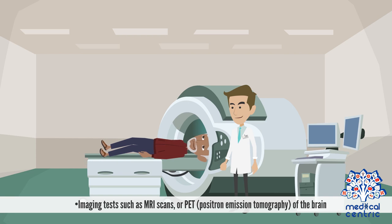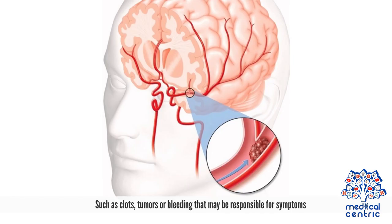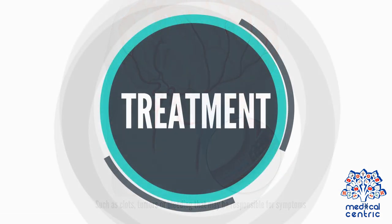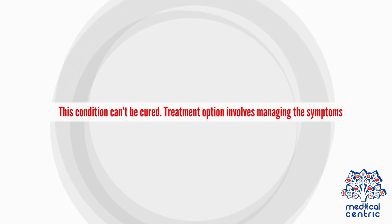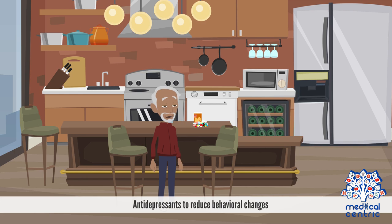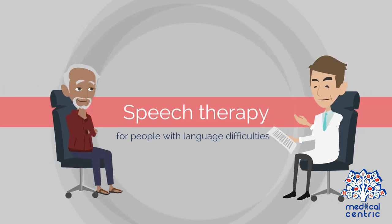Imaging tests such as MRI scans or PET — positron emission tomography — of the brain provide visual images that may help the doctor pinpoint abnormalities such as clots, tumors, or bleeding that may be responsible for symptoms. Treatment: This condition cannot be cured. Treatment options involve managing the symptoms, including antidepressants to reduce behavioral changes, antipsychotics, and speech therapy for people with language difficulties.